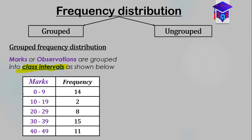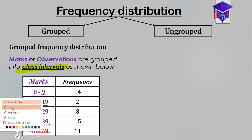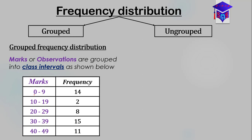The class intervals we are talking about are: 0 to 9, 10 to 19, 20 to 29, 30 to 39, and 40 to 49. So we have five different class intervals in this frequency distribution table. For example, between the interval 0 to 9 the frequency is 14, and between 10 to 19 the frequency is 2.